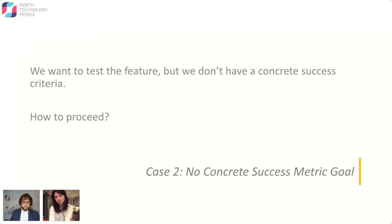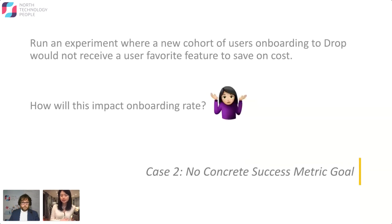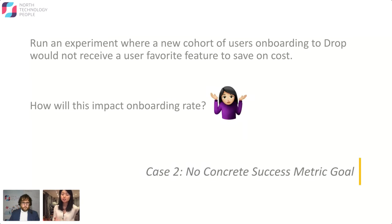Scenario number two: what happens when there's no concrete success metric goal? Without a success metric, you can't back out the sample size or experiment duration — which the PM will often ask for. In this case, I wanted to run an experiment where new users onboarding to Drop would not receive a feature called Power Offer that many users loved. We were removing this feature to save on business costs, and the PM asked how this would impact our onboarding rate. The problem was there was no prior version of the app without this feature, so there was no benchmark.